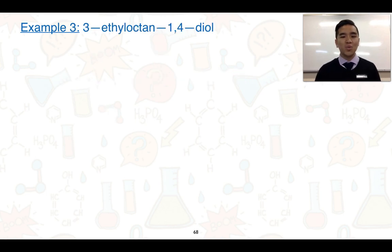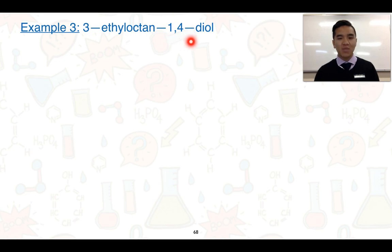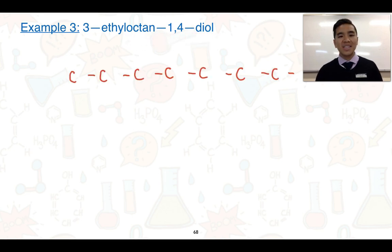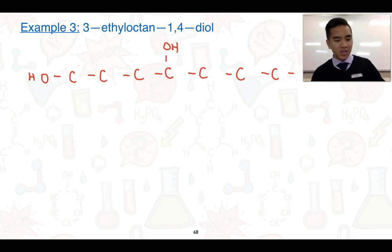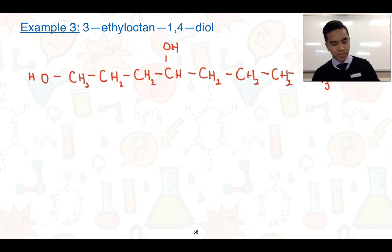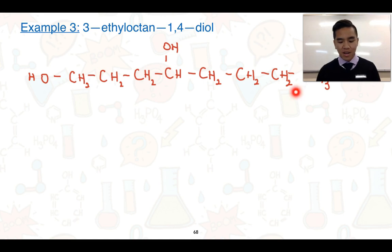Our final example is a diol, so there will be two hydroxyl groups. We have 3-ethyloctane-1,4-diol. Start with the longest carbon chain of eight, add in the hydroxyl groups at carbons one and four, then add the ethyl group at carbon three and fill in the remaining bonds with hydrogens. Apologies if the far right of the structure isn't clearly visible — there's a CH₂ and a CH₃ underneath there.